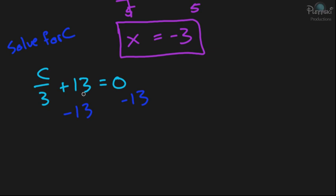And 13 minus 13 is 0. So, we're left with c over 3, or c divided by 3. And then a 0 minus 13 on the other side is just going to be negative 13.